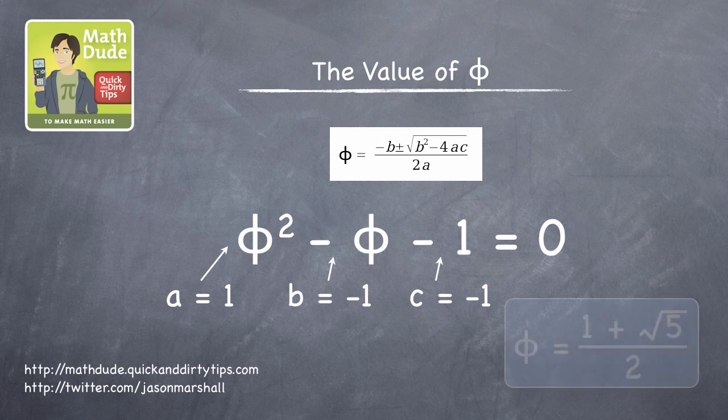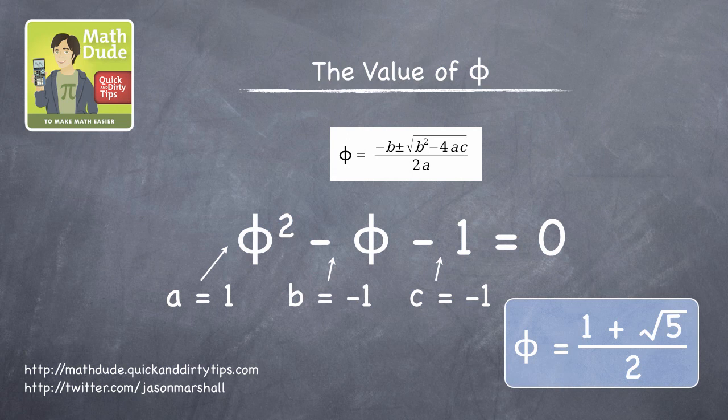...one of which is 1 plus the square root of 5 all over 2. Which, yes, you guessed it, has a decimal value of approximately 1.618. In other words, whereas 1.618 is an approximation to phi, 1 plus the square root of 5 over 2 is the exact value of phi.